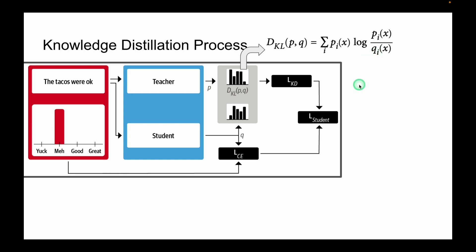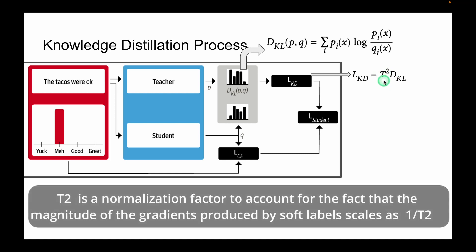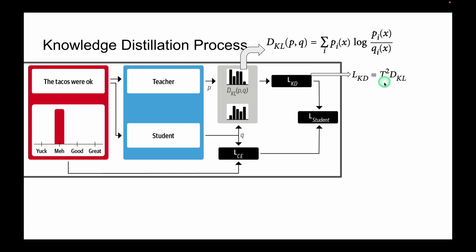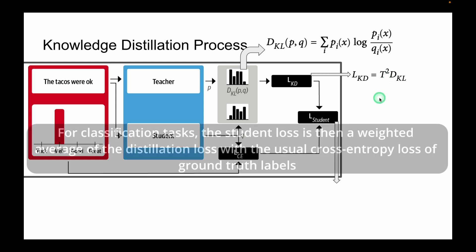This allows us to define another loss which is called the Knowledge Distillation loss. So this is the equation for Knowledge Distillation loss. This T squared parameter is a normalization factor to account for the fact that the magnitude of the gradients produced by soft labels scaled as 1 upon T squared.